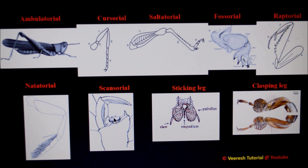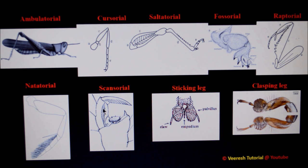The next type is scansorial legs. All three pairs of legs of lice are modified into scansorial type, which are suited for clinging to the hair of their hosts. Here, the tibia is stout and bears a thumb-like process. The tarsus is also single-segmented, bearing a large single claw. This large single claw fits against the thumb-like process, which is useful in clinging to hair.